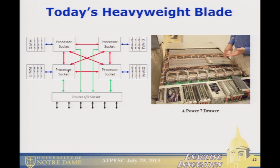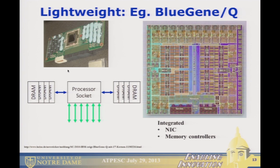What's important about these machines is that within any one node there are a bunch of sockets for processors, additional sockets for NICs or other things, and a variety of interfaces — some of which allow sockets to communicate with other sockets in terms of memory traffic on-node. The lightweight things like Blue Gene put everything into one chip: router functions, memory controllers, and everything else, with a couple of memory channels off of it.